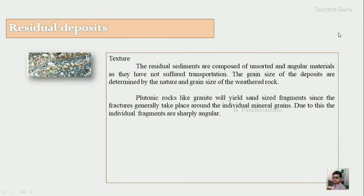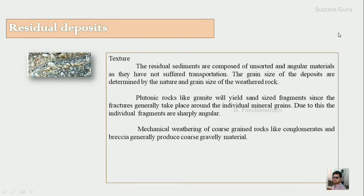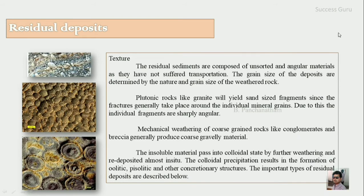For example, plutonic rocks like granite yield sand-size fragments, since fracture generally takes place around the individual mineral grains, making the individual fragments sharply angular. Mechanical weathering of a coarse grained rock like conglomerate or breccia generally produces coarse gravelly material. The insoluble material passes into the colloidal state by further weathering and is re-deposited almost in situ. This colloidal precipitate results in the formation of oolites, pisolites, and other concretion structures. The left-side image shows the oolite and pisolite structure.